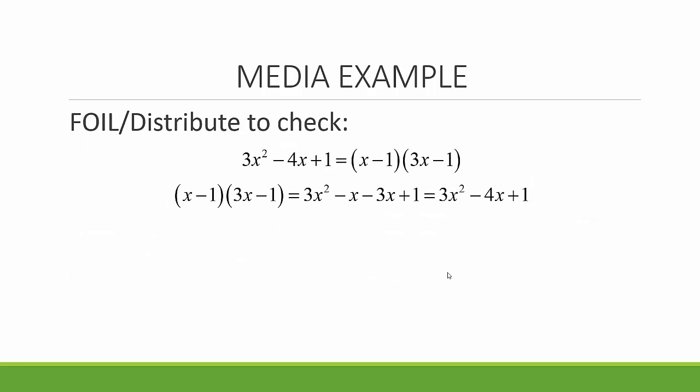We FOIL or distribute to check our answer. Distributing x minus 1 times 3x minus 1, we get 3x squared minus x minus 3x plus 1, which simplifies to 3x squared minus 4x plus 1. This checks our answer.